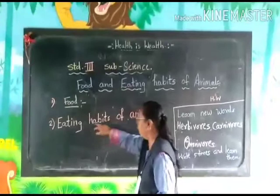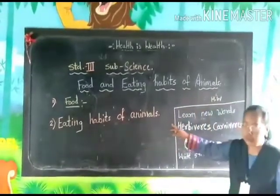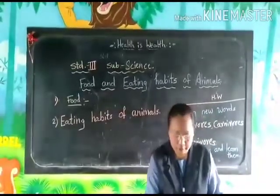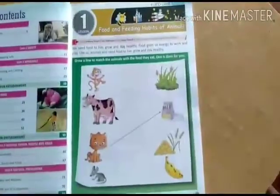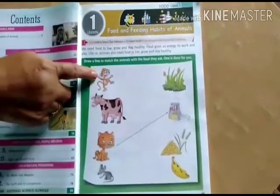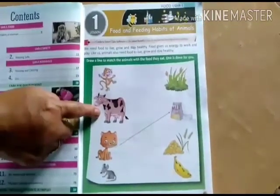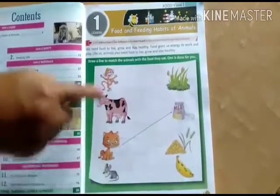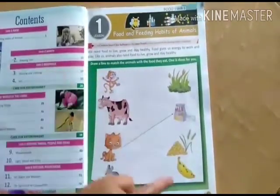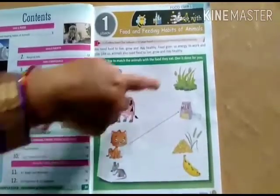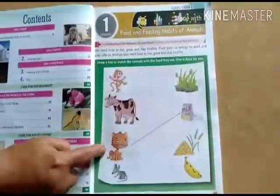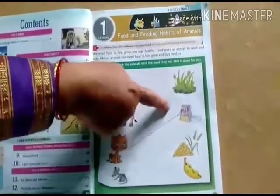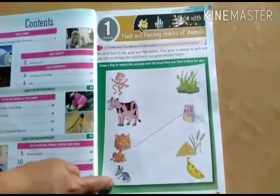Eating habits of animals. Students, now just look at this. What is this? A monkey, a cow, a cat and a rat. What does the monkey eat? Banana. What does the cow eat? Grass. What does the cat eat? Milk. And the rat eats grains.